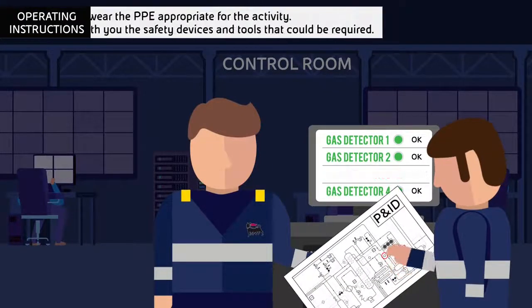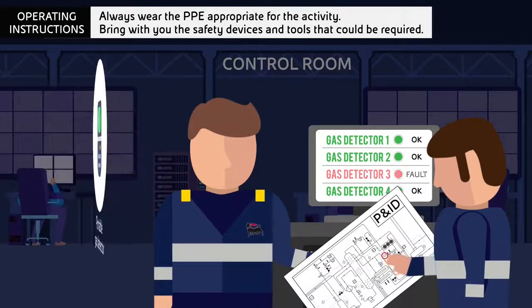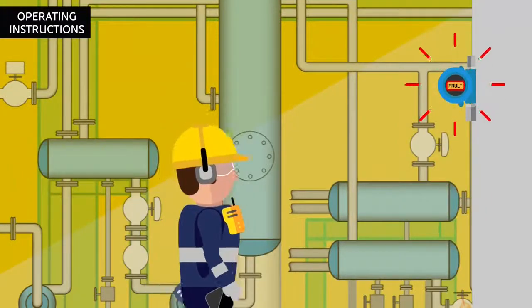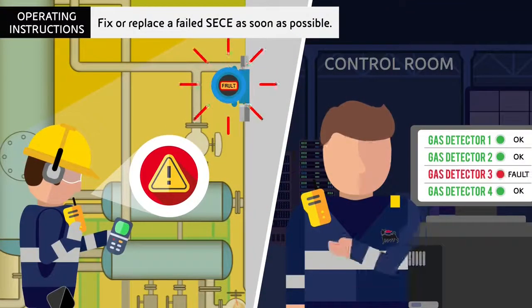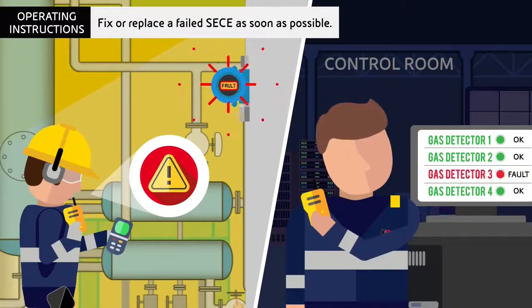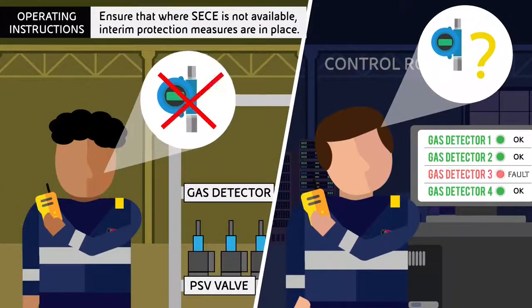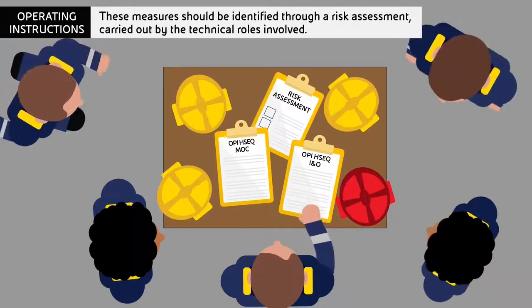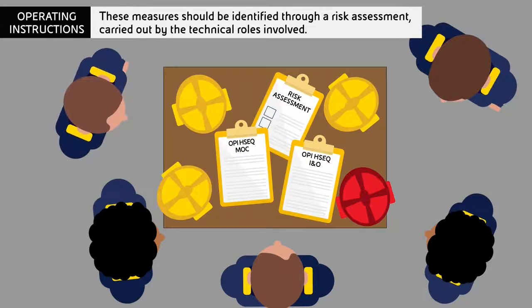Always wear appropriate PPE for the activity and bring with you the safety devices and tools that could be required. Fix or replace a failed CC as soon as possible, ensuring that, where it is not available, interim protection measures are in place. These measures should be identified through a risk assessment, carried out by the technical roles involved.